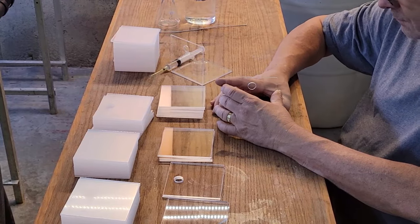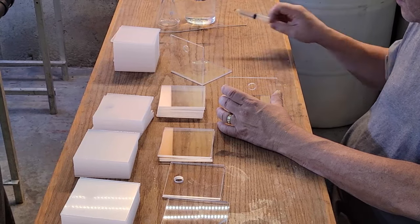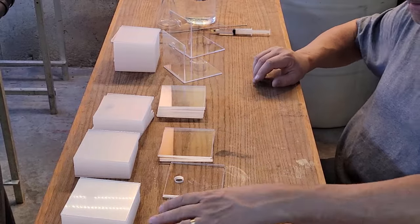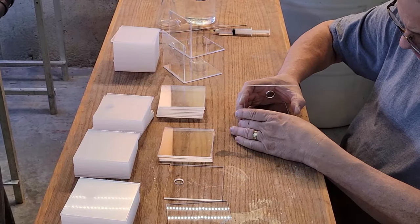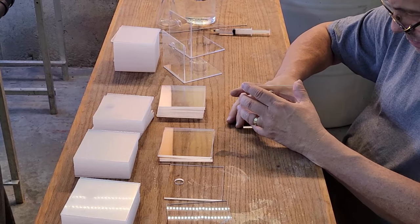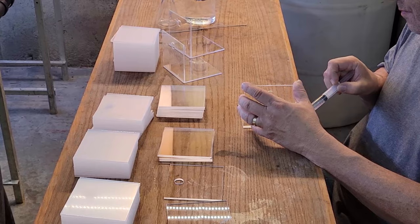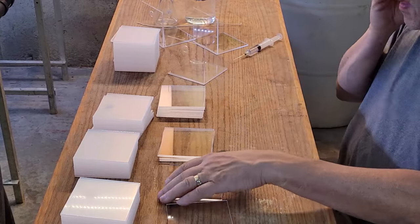I'm going to assembly line this because when you push the syringe down, you don't always get the exact amount—there could be extra. If I turn that over at this point, it could run and you'd end up with a white smear on the acrylic. I want to keep these as clear as possible, and this also makes it much faster.